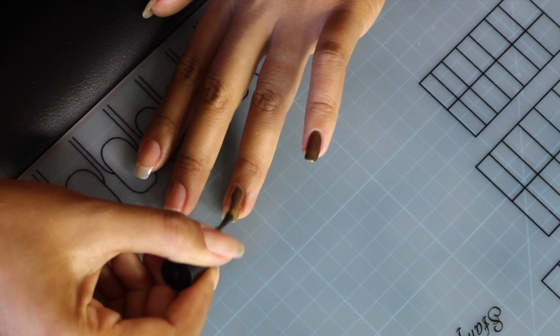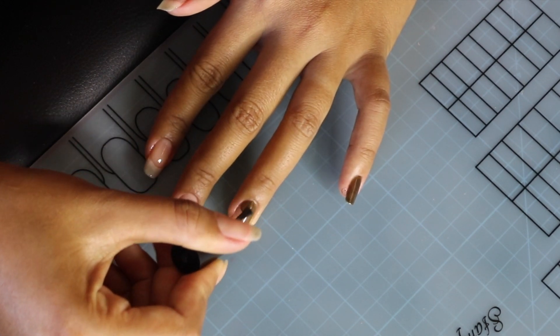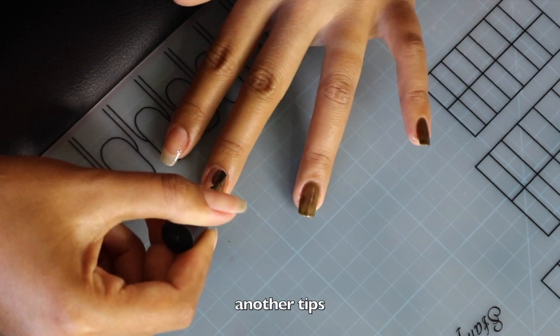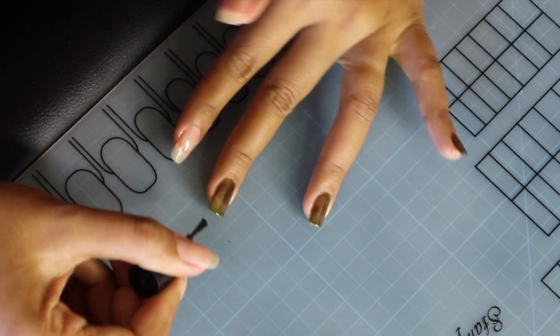I'm applying the first coating. As you can see, I'm doing the edge first before I go to the middle. Another tip: in the first coating you need to put a thin layer on.